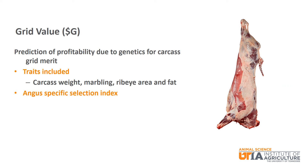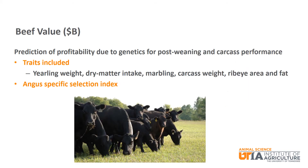Grid value or Dollar G is an Angus-specific selection index that is a prediction of profitability due to genetics for carcass grid merit. It includes carcass weight, marbling, ribeye area, and fat in calculating the value. Beef value or Dollar B is another Angus-specific selection index. It includes yearling weight, dry matter intake, marbling, carcass weight, ribeye area, and fat in calculating the value.